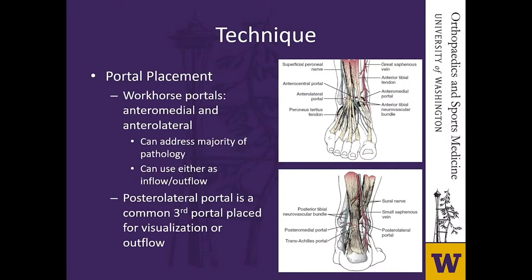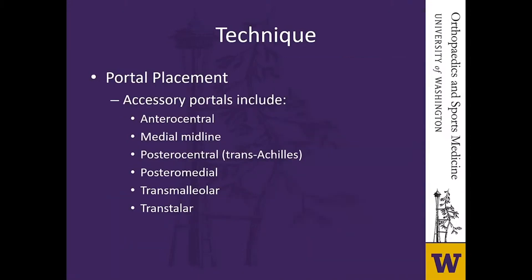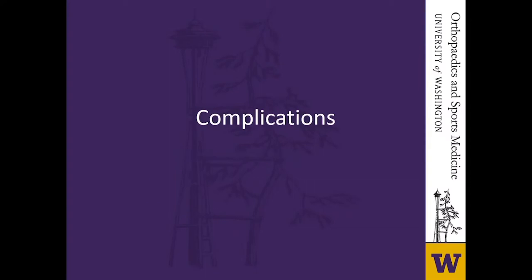A common third portal is the posterolateral portal, used for visualization or outflow — placed just lateral to the Achilles tendon in the soft spot about one centimeter above the tip of the fibula, avoiding the sural nerve and small saphenous vein. There are multiple other accessory portals — anterior central, medial midline, posterior central, posterior medial, transmalleolar, or transtalar — each with their own risk of complication, particularly neurovascular, but providing easier access to different aspects of the ankle joint depending on pathology.